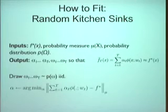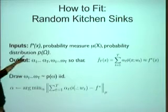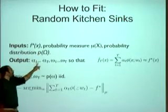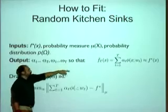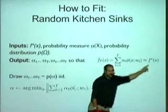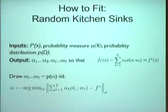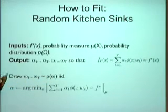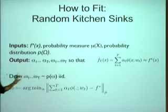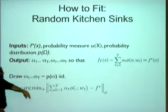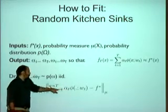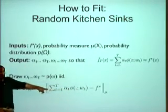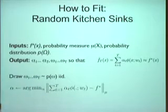Here's the random kitchen sinks idea for fitting functions. You're given a target function and asked to find alphas and omegas such that a T-term approximation is close to f*. But now we do something much simpler: just pick the omegas from some distribution randomly — nothing greedy. Then to pick the alphas, just solve this convex problem all at once — it looks like a least squares problem. It's a batch optimization over T alphas.